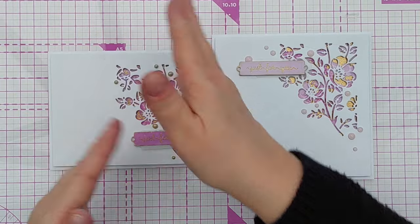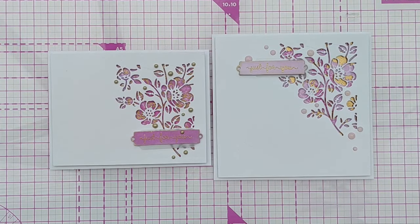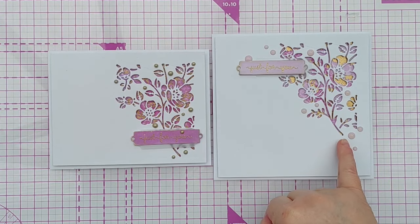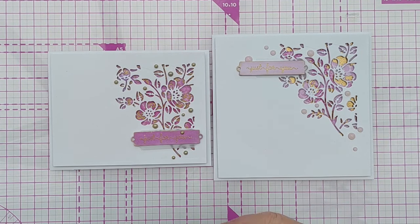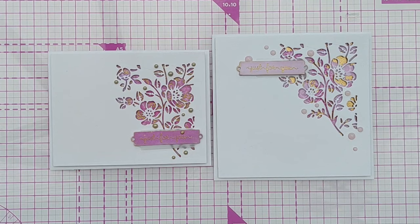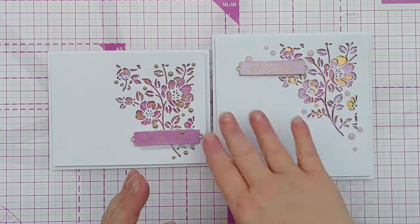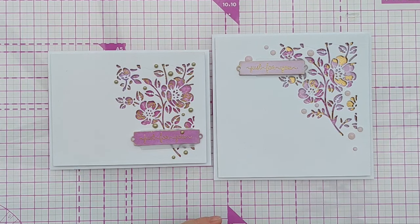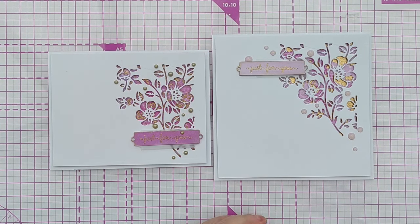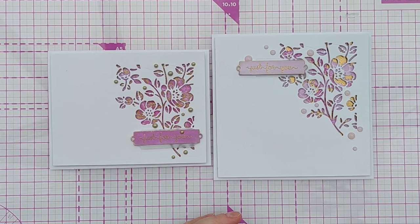I like the compactness of this. At the moment the Glossy Accents are a bit cloudy, I think this is a bottle that's a bit old, but they do dry clear when they dry and so the lavender-y color of the dots will show through. Right, that's magenta day done and dusted.